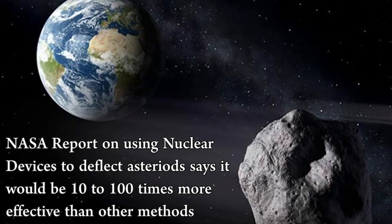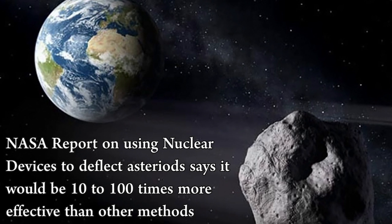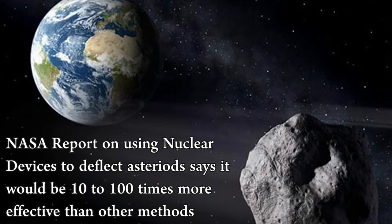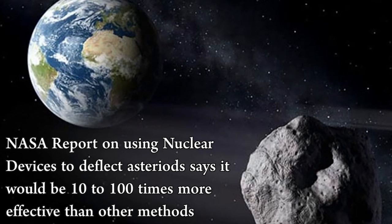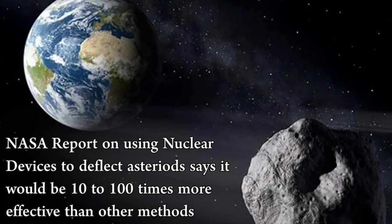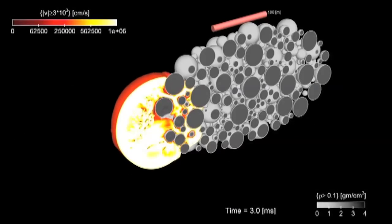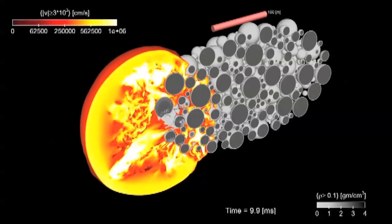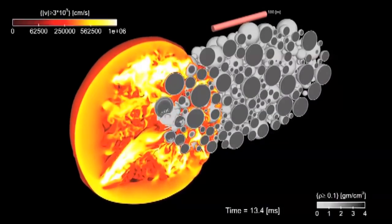A NASA study in 2007 concluded that using nuclear devices to push an object off course would be between 10 to 100 times more effective than the kinetic impactor or push method. This has been backed up by modeling such an event on the Celo supercomputer at the Los Alamos laboratory in 2011.